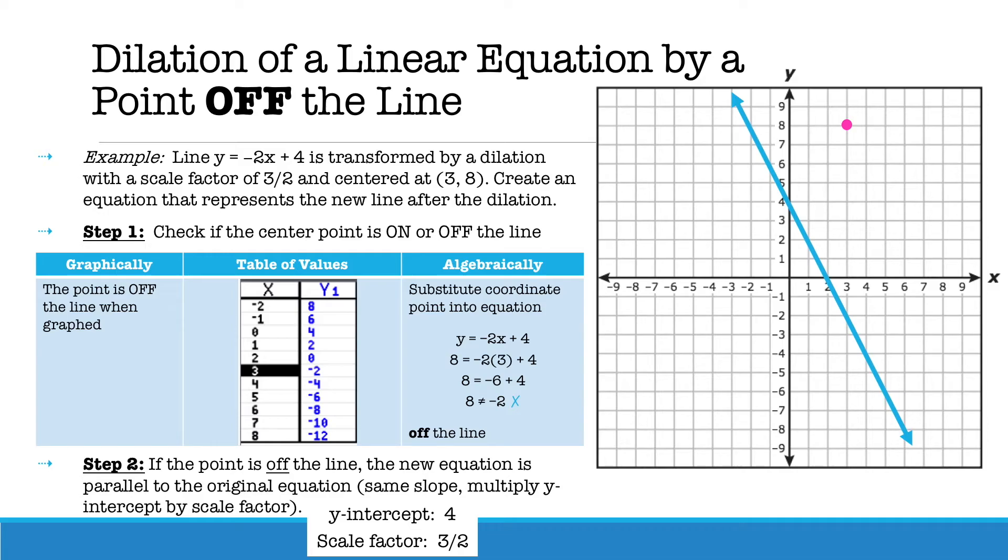The y-intercept in this case is positive 4, and your scale factor is 3 halves. So we're going to multiply our y-intercept by our scale factor in order to get our new y-intercept.